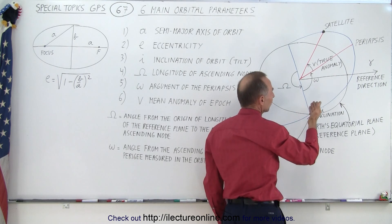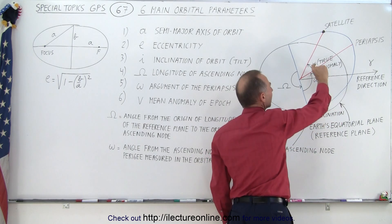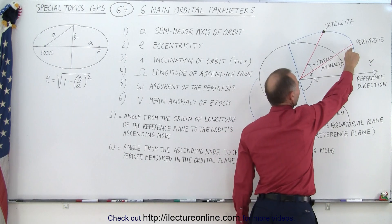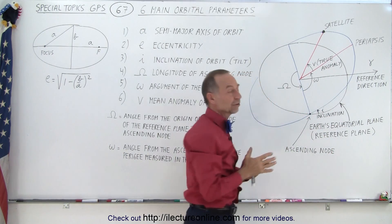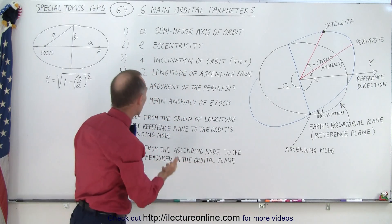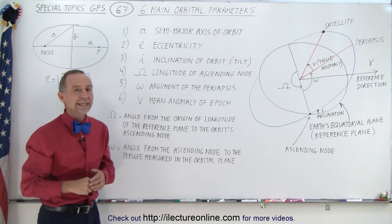So essentially, it's expressed in terms of what portion of the entire period has elapsed from the point where it passed the periapsis, to where the satellite currently is. And that's called the true anomaly, or the mean anomaly of the epoch.